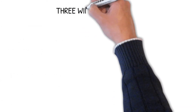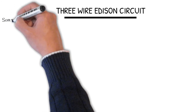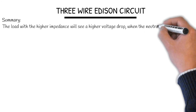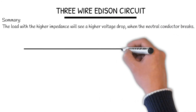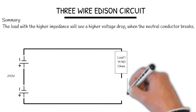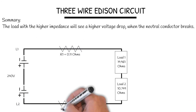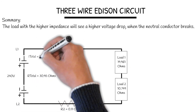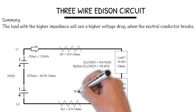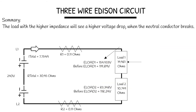3 Wire Edison Circuit summary. The load with the higher impedance will see a higher volt drop when the neutral conductor breaks. As you can see, Load 1 has 19.98 ohms, which is higher, therefore it has a higher volt drop.